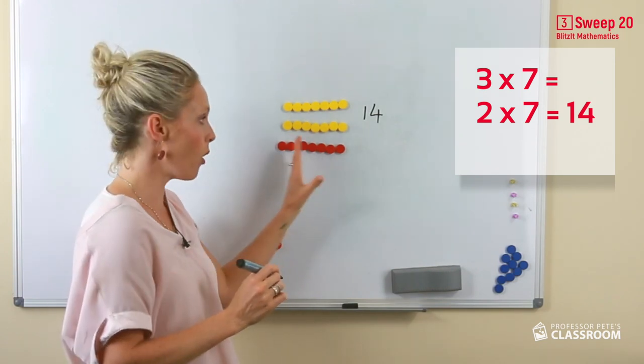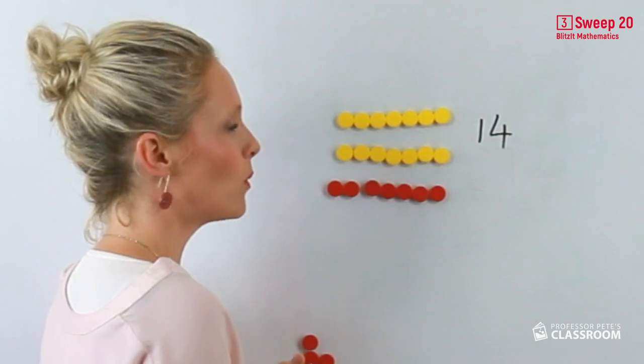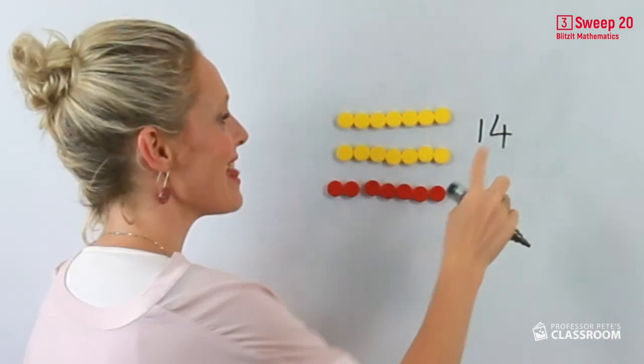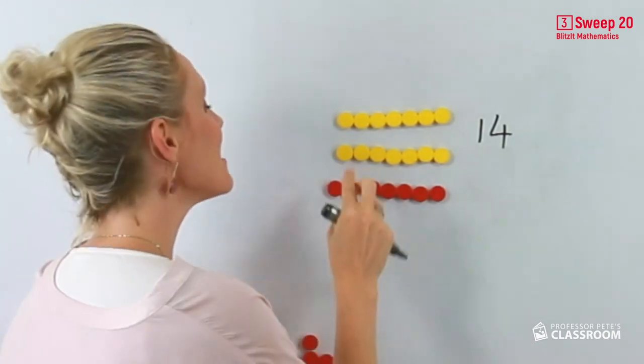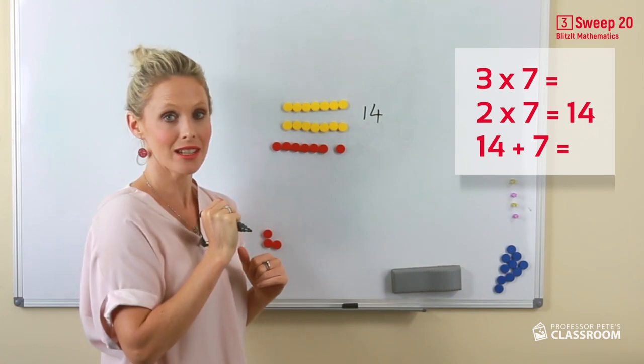Now we have a whole other seven to account for. Well, we know from our rainbow number facts that four and six is another ten.